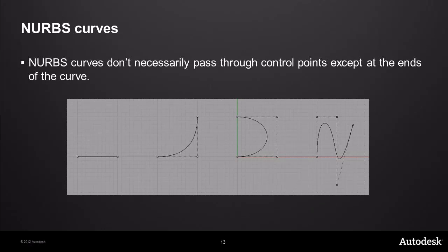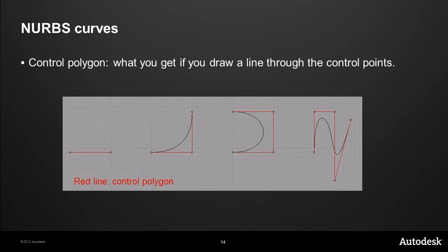NURBS curves don't necessarily pass through the control points except at the ends of the curve. Typically, if they pass through a control point in the middle, it's either incidental or you've got a bunch of control points all lined up in a linear fashion. Another important concept in T-splines is the control polygon — what you get when you draw a polyline through your control points. You'll hear about smooth mode and boxy mode, sometimes called the cage. I'll switch between them a lot in the live demo — it's just the difference between the control points as a polygon and the smooth curve or surface that results from those points.